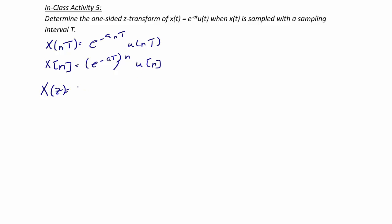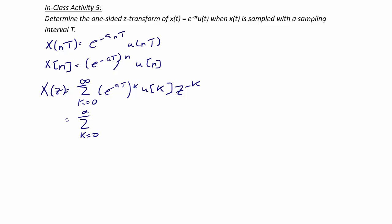The Z transform X of Z is equal to the summation from K equals zero to infinity of E to the negative A T to the K, U of K, times Z to the negative K. Since U of K equals one from K equals zero to infinity, we can rewrite this as the summation from K equals zero to infinity of E to the negative A T raised to the K times Z to the negative K.